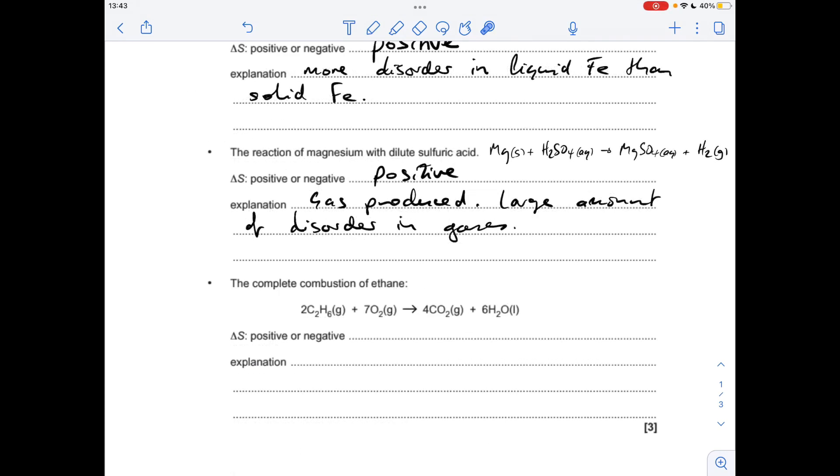And for the final one, you can see we're going from nine moles of gas down to four moles of gas. So this is a negative entropy change. There's less disorder on the right-hand side because there's fewer moles of gas.